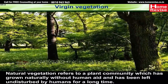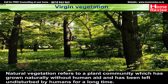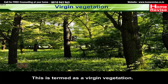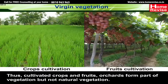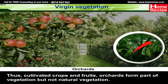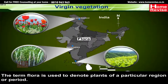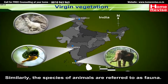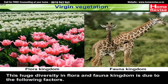Virgin vegetation — natural vegetation refers to a plant community which has grown naturally without human aid and has been left undisturbed by humans for a long time. This is termed virgin vegetation. Cultivated crops, fruits, and orchards form a part of vegetation but not natural vegetation. The term flora is used to denote plants of a particular region or period, while the species of animals are referred to as fauna. This huge diversity in flora and fauna is due to the following factors.